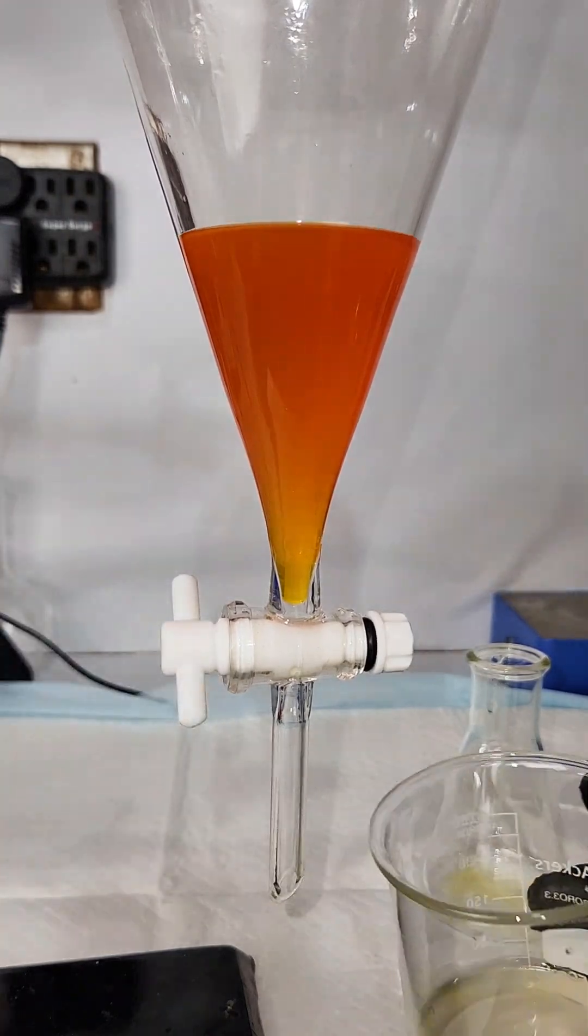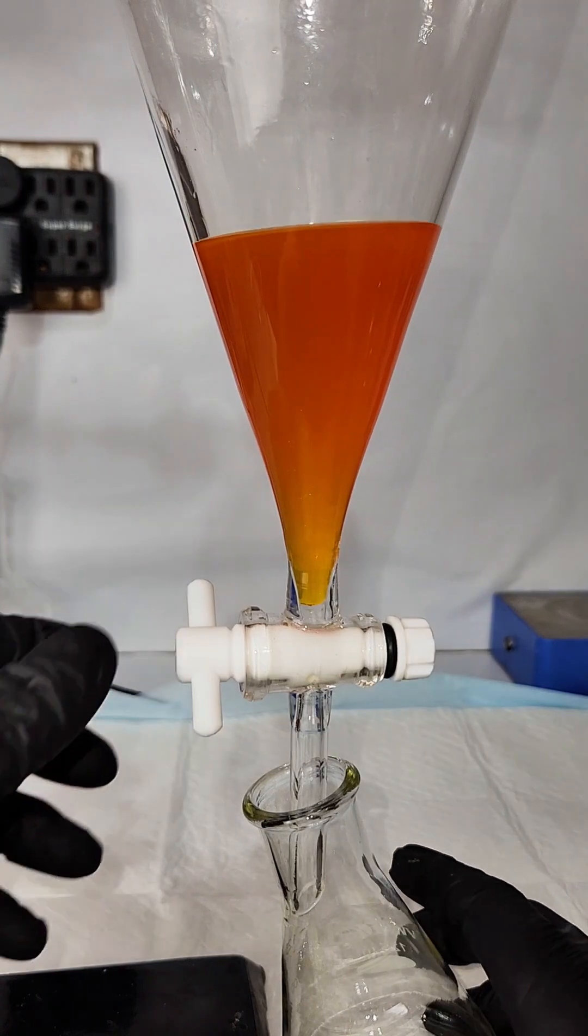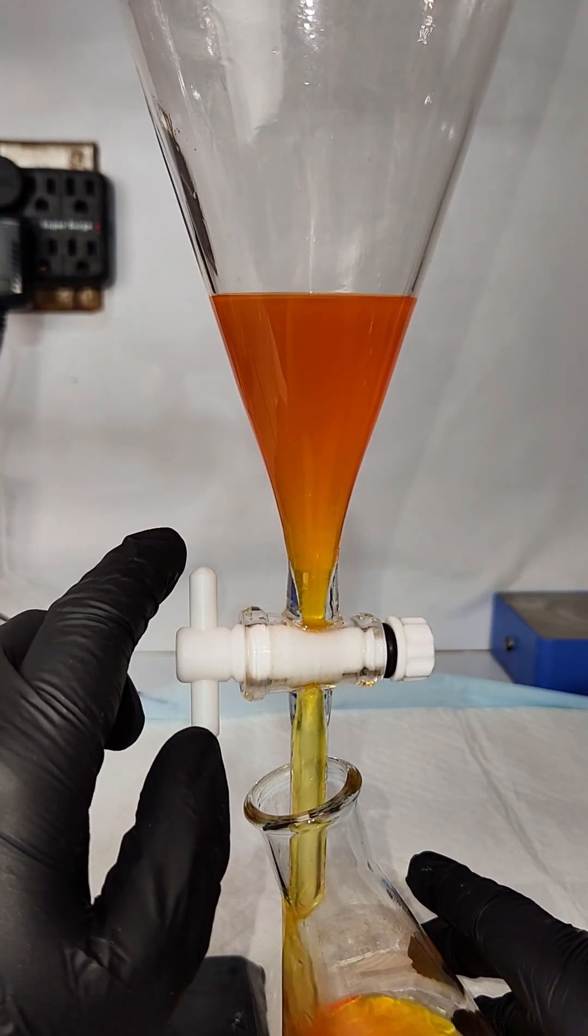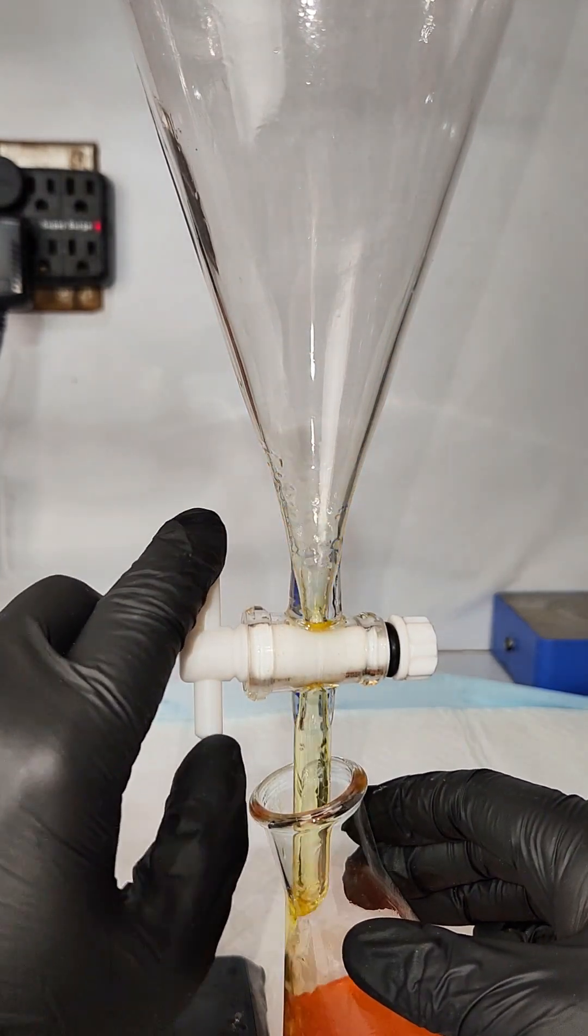My next step is to dry off any remaining moisture. This is done by the simple addition of any number of hydroscopic inorganic compounds. Most commonly, this would be calcium chloride, magnesium sulfate, or sodium sulfate, and I opted for calcium chloride.